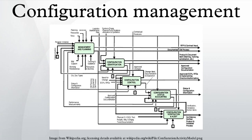CM verifies that a system performs as intended and is identified and documented in sufficient detail to support its projected life cycle. The CM process facilitates orderly management of system information and system changes for beneficial purposes such as revising capability, improving performance, reliability, or maintainability.